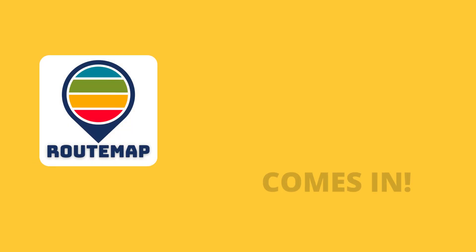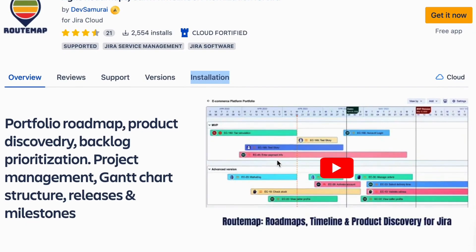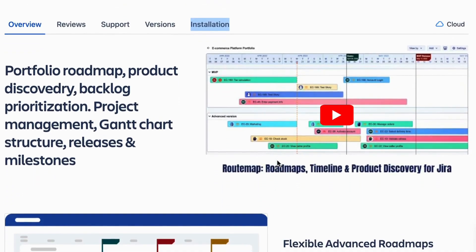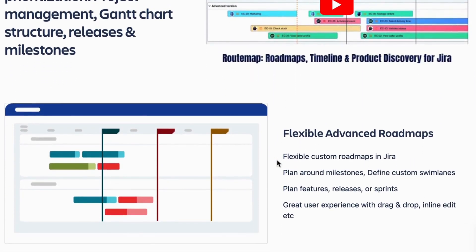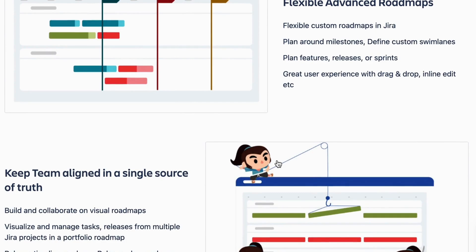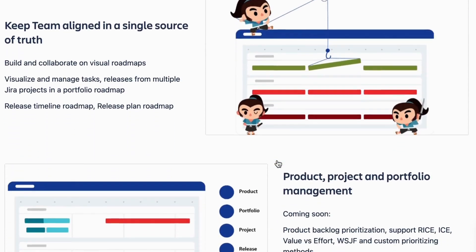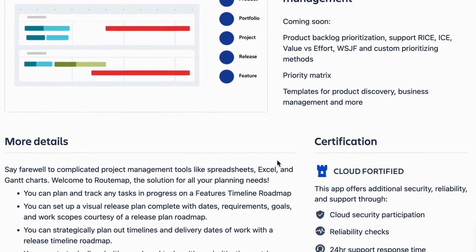And that's where Rootmap comes in. Rootmap is a tool for JIRA that helps you create a visual representation of your product roadmap — flexible, advanced roadmaps — making it easy to understand and plan.